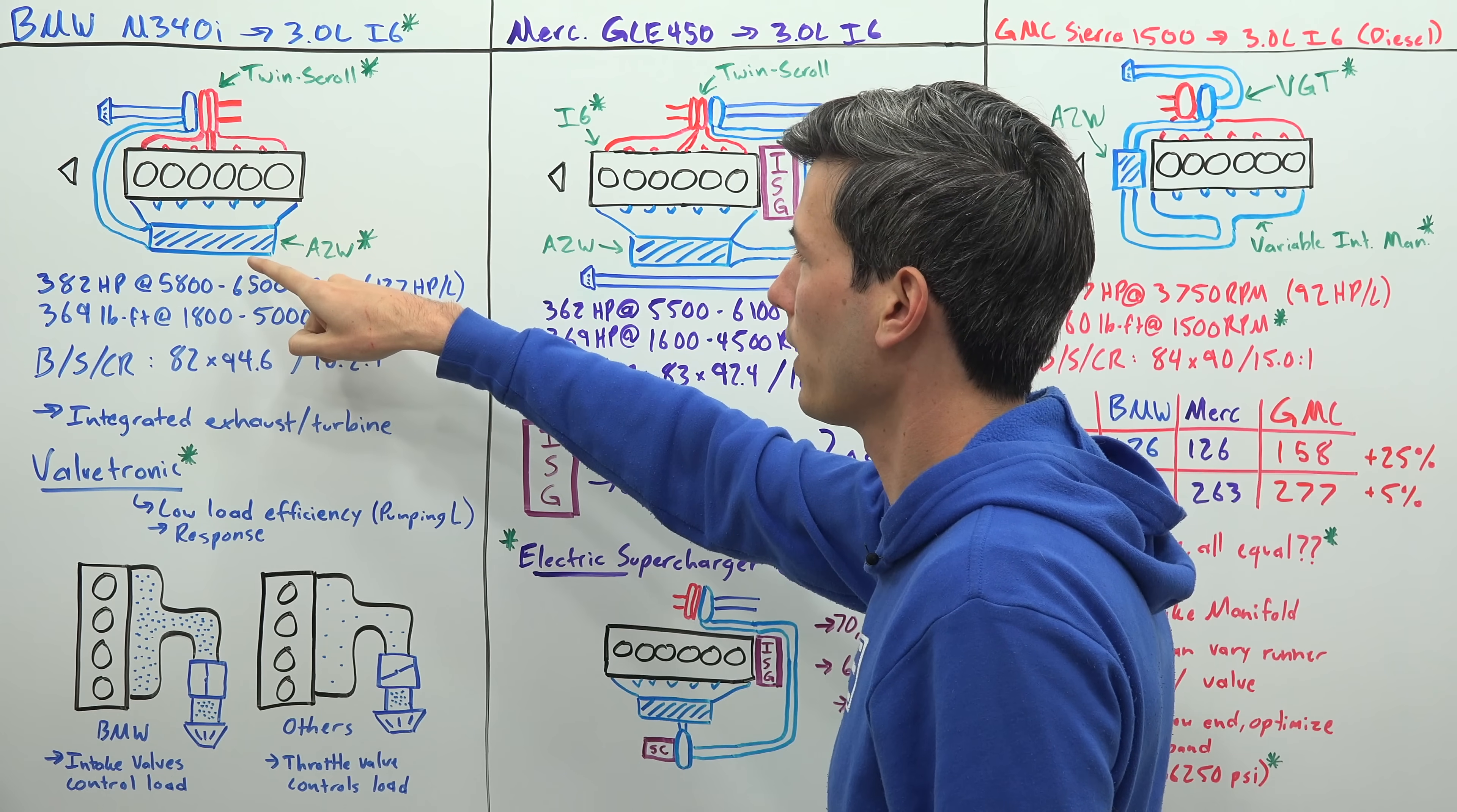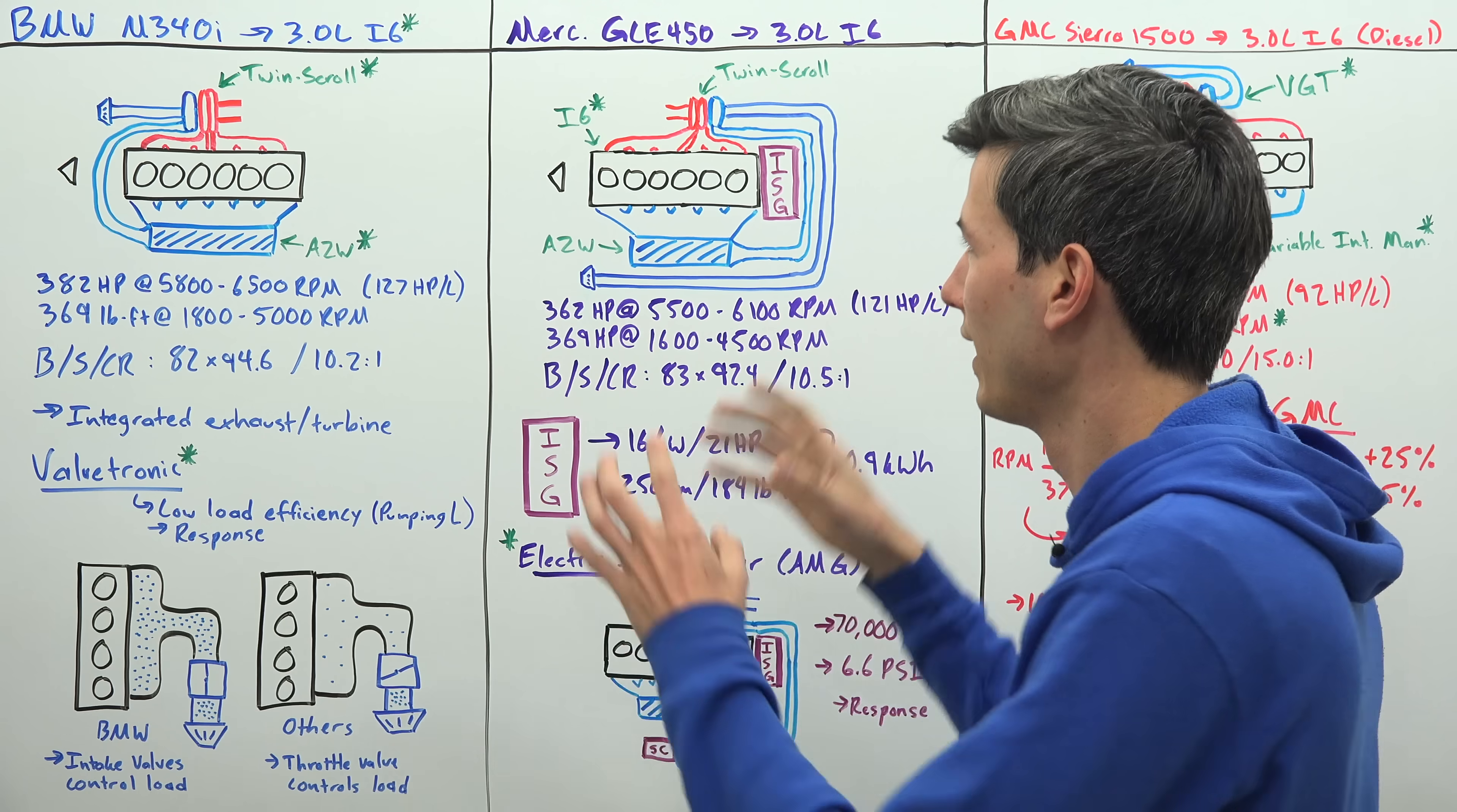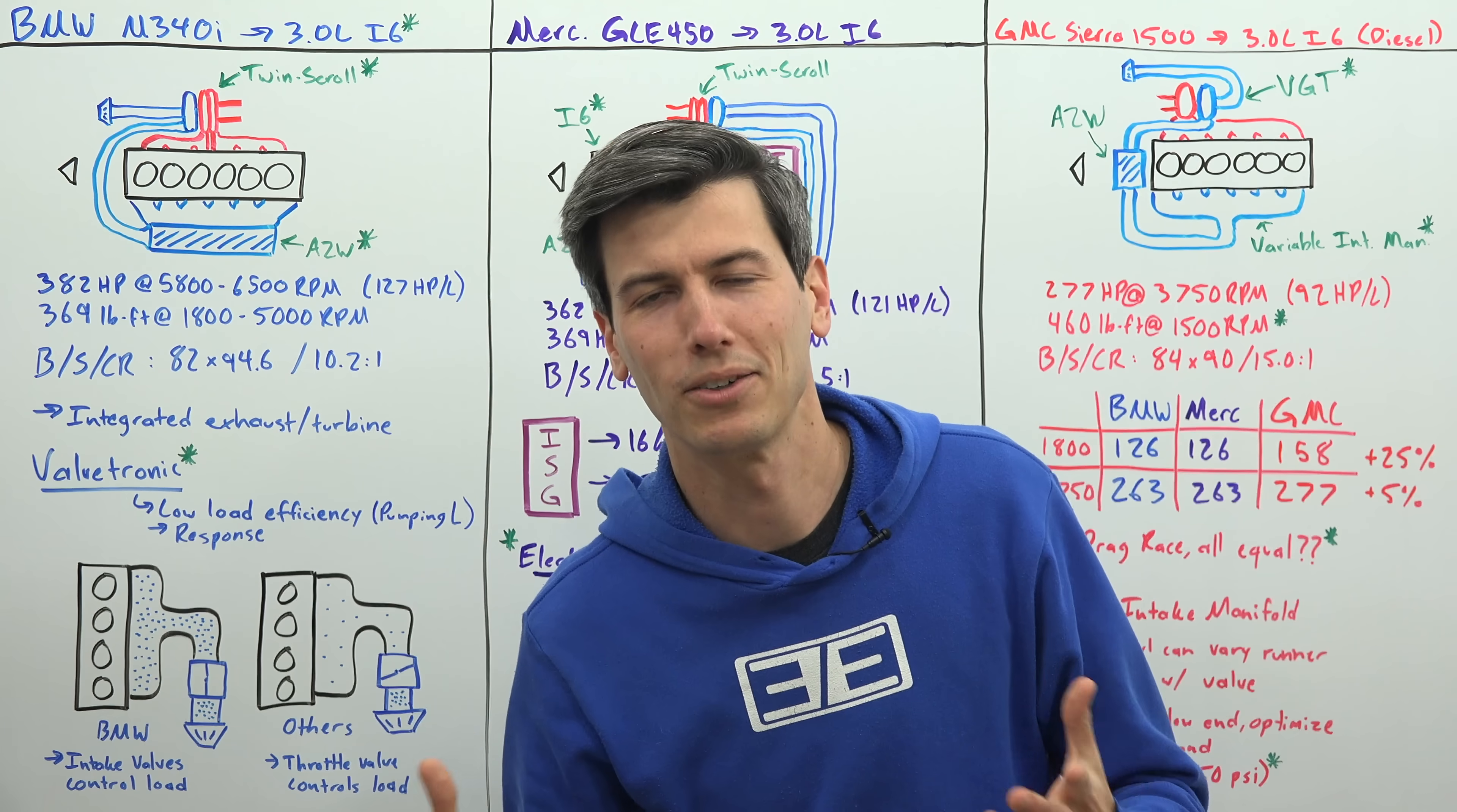It passes through the air to water intercooler, goes in the engine, out through the twin scroll turbocharger. Now on this board you'll notice these little green asterisks, these little green stars.